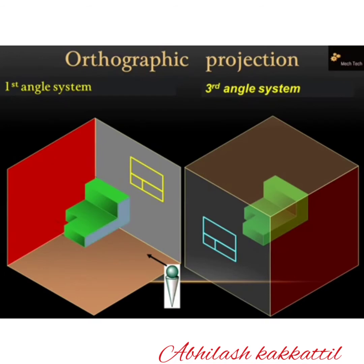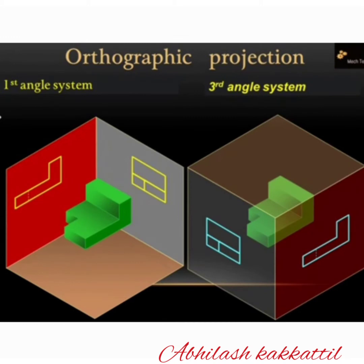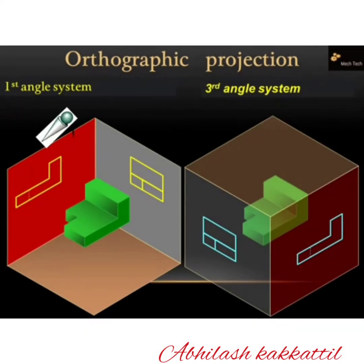In the first angle system, the side view and front view are positioned accordingly — the front view is in front and the side view is to the side. The object projects back to the profile plane. In the second angle system, the front view and side view positions differ. The horizontal plane and the arrangement of views distinguish the first angle system from the second angle system.